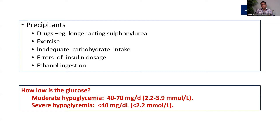We can categorize hypoglycemia as mild, moderate, or severe. It is important to know moderate and severe, as mild hypoglycemia patients can self-treat. Moderate hypoglycemia is defined as blood sugar 40–70 mg/dL or 2.2–3.9 mmol/L. Severe hypoglycemia is defined as less than 40 mg/dL or less than 2.2 mmol/L.